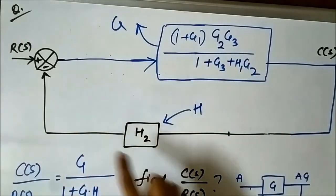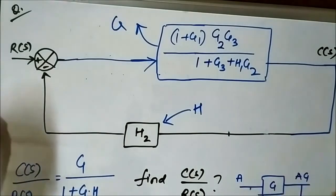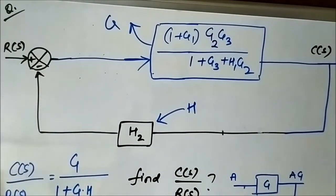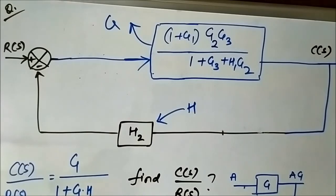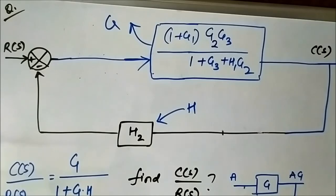So here we have again reduced this complicated block diagram into a simple form and calculated the overall transfer function. This is the third question related to block diagram reduction that we have solved. We will solve more questions to clear our concepts, as this is a very important part of control systems. I hope you like this video — please subscribe to Engineering Tutorial for more videos related to electrical, electronics, instrumentation, and communication engineering. Have a great day, thank you very much.